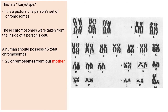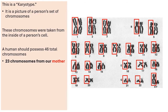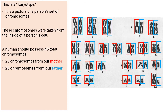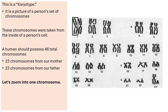Why do we have 46 chromosomes? Well, we received 23 of them from our mother, and the other 23 chromosomes we inherited from our father. So we are half mom and half dad. Now let's zoom in — see the blinking box around one of the chromosome number ones? Let's zoom in for a closer look.